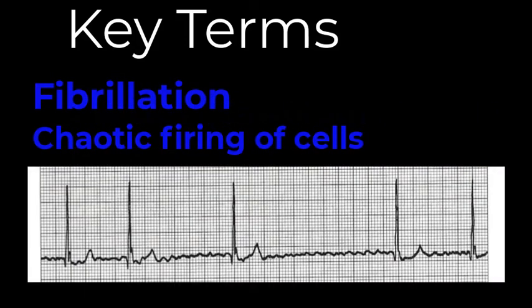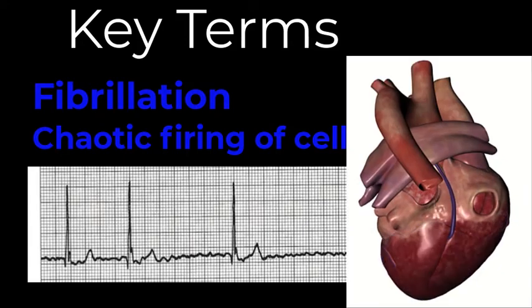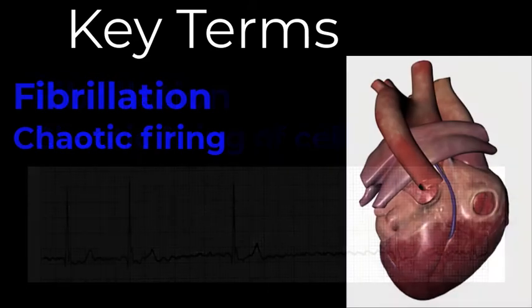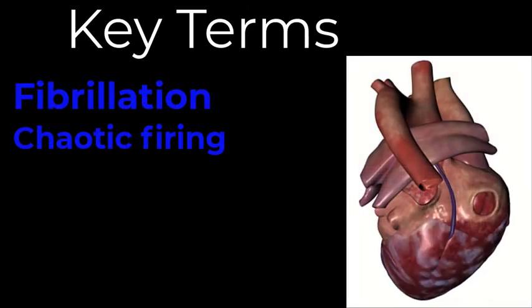Fibrillation can be used to describe atrial or ventricular rhythms. It describes disorganized, irregular, and rapid electrical impulses throughout the atria or ventricle, which results in ineffective quivering of the muscle and no cardiac output from the affected chambers.